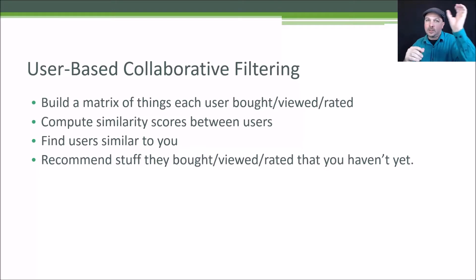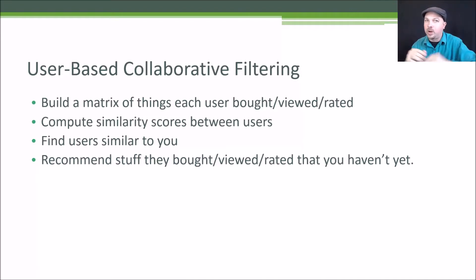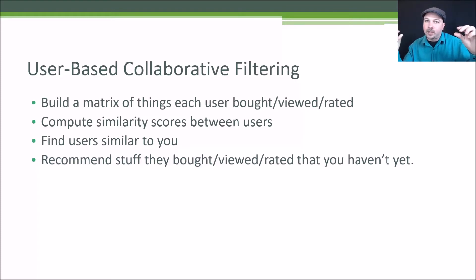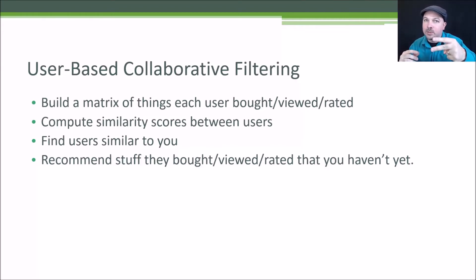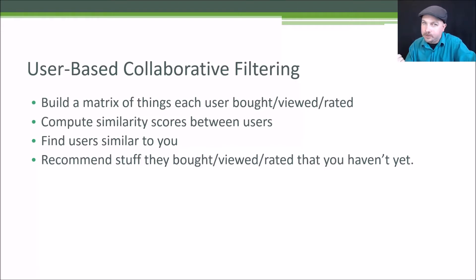The idea is we build up a matrix of everything every user has ever bought, viewed, rated, or whatever signal of interest you want to base the system on. We end up with a row for every user, and each column is an item — a movie, a product, a web page — you can use this for many things. Then we use that matrix to compute the similarity between different users by treating each row as a vector. Two users who liked mostly the same things would be very similar to each other.